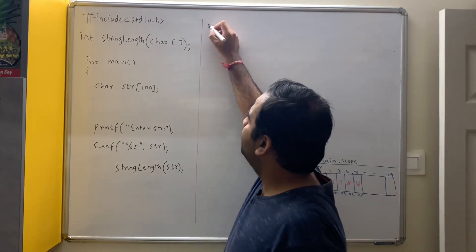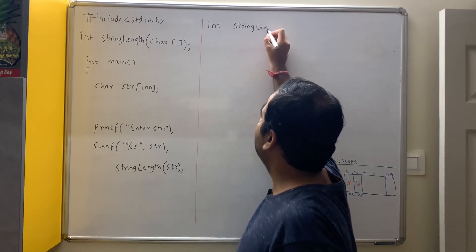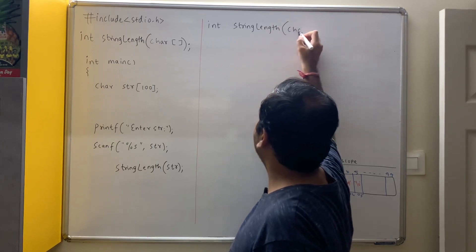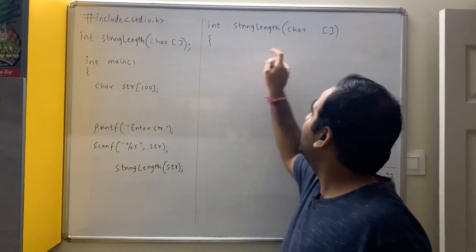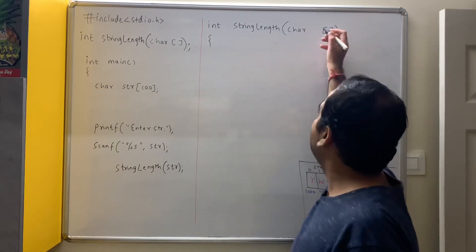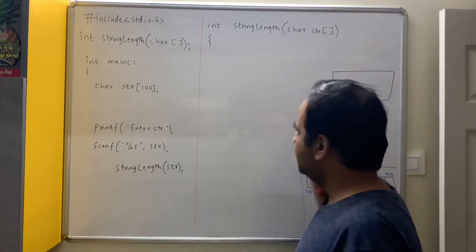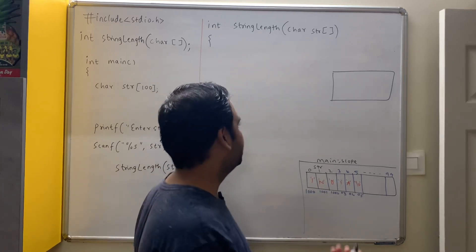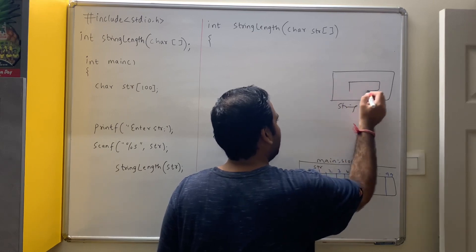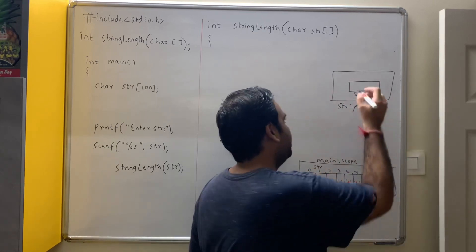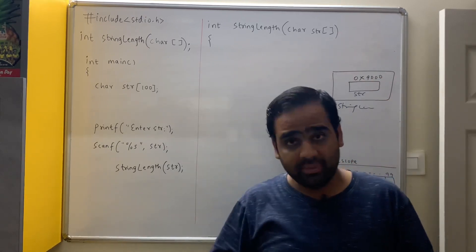Now we need to implement this. We say: int string_length(char str[]). The parameter name str is mandatory — you can use any parameter name, it doesn't matter. As soon as you call the function, the scope of the function gets activated. This is the string_length function with one parameter called str. Let the address of this be say 0x9000 — it is randomly allocated. Whenever arrays are passed to functions, the base address gets passed, not the complete array. The base address here is 1000, so 1000 gets passed.